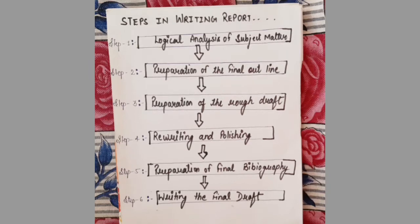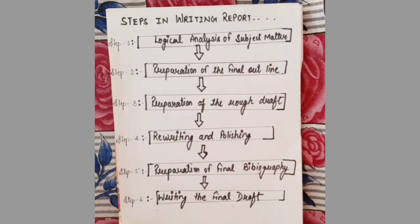This brings us to step two: preparation of the final outline. Outlines are the framework upon which long written reports are constructed. The outline is basically a framework on which your lengthy reports are built and constructed. This involves the logical arrangement of material and reminders of the points to stress in the report.